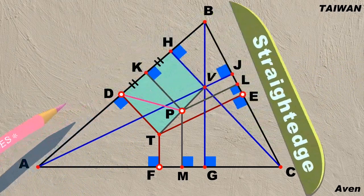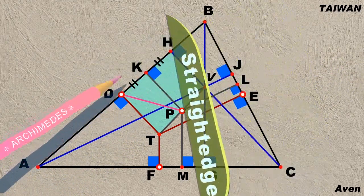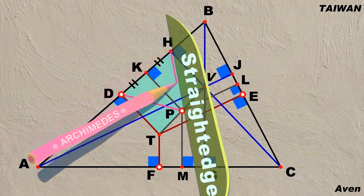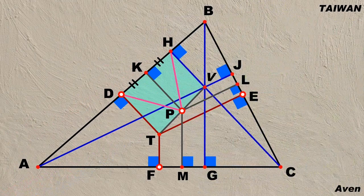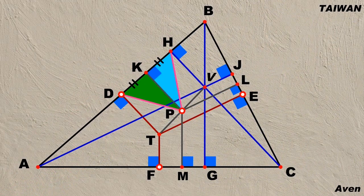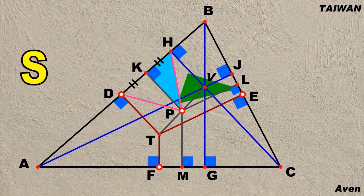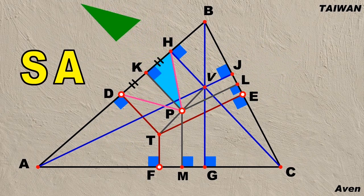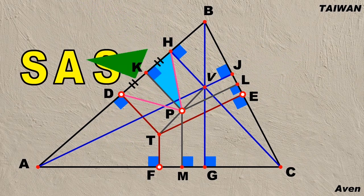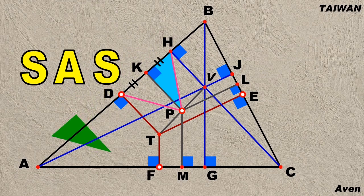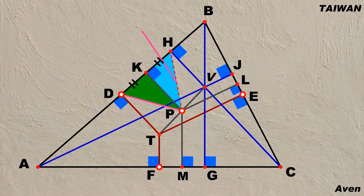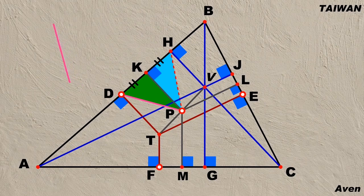After constructing two line segments PD and HP, we find that the two new colored triangles are congruent because of the relation side-angle-side. The two pink hypotenuses are therefore equal to each other.